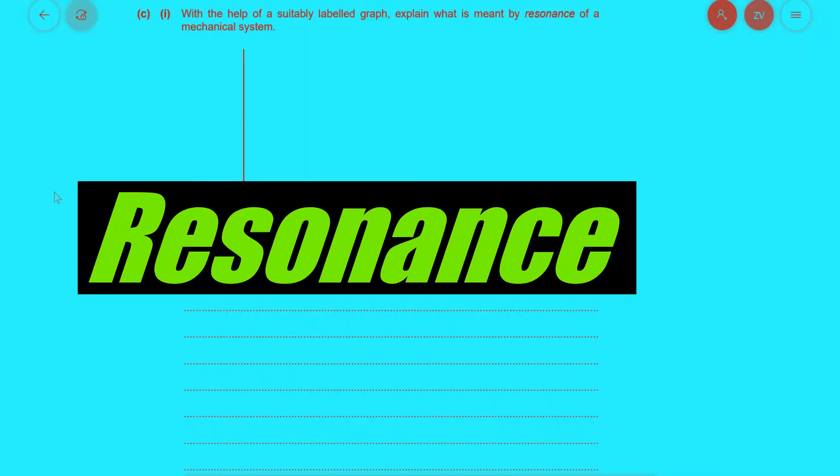Part c: let's have a look at resonance. With the help of a suitably labeled diagram, explain what is meant by the resonance of a mechanical system. Well let's have a go. So this is what our diagram will look like: we have the amplitude on the y-axis and we have frequency on the x-axis. In fact this is the driving frequency in particular. There will be a peak at which the amplitude will be at a maximum occurring at the natural frequency of the object. Okay, well now let's explain in words what is meant by resonance.